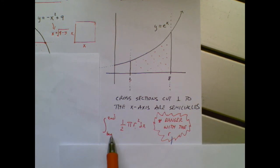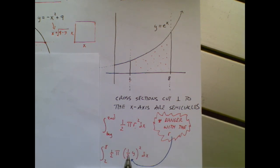I know it's dx because I'm traveling along the x-axis. 1 half pi r squared is the area of a semi-circle. Well, I say we have some danger with the r. And here's what I'm talking about.